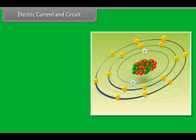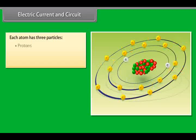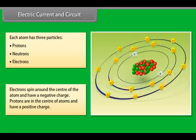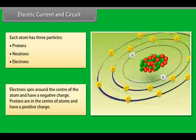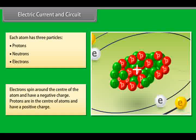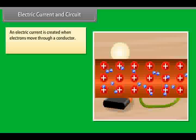Electric current and circuit. All things around us are made up of atoms. Each atom has three particles: protons, neutrons, and electrons. Electrons spin around the center of the atom and have a negative charge. Protons are in the center of atoms and have a positive charge. An electric current is created when electrons move through a conductor.